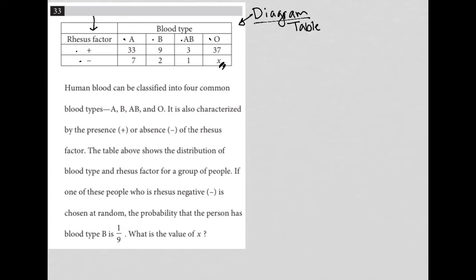So let's read it and see exactly what we're supposed to do. Human blood can be classified into four common blood types: A, B, AB, and O, which we saw all those in the table. It is also characterized by the presence (positive) or absence (negative) of the rhesus factor. Okay, so we see that in the table as well.